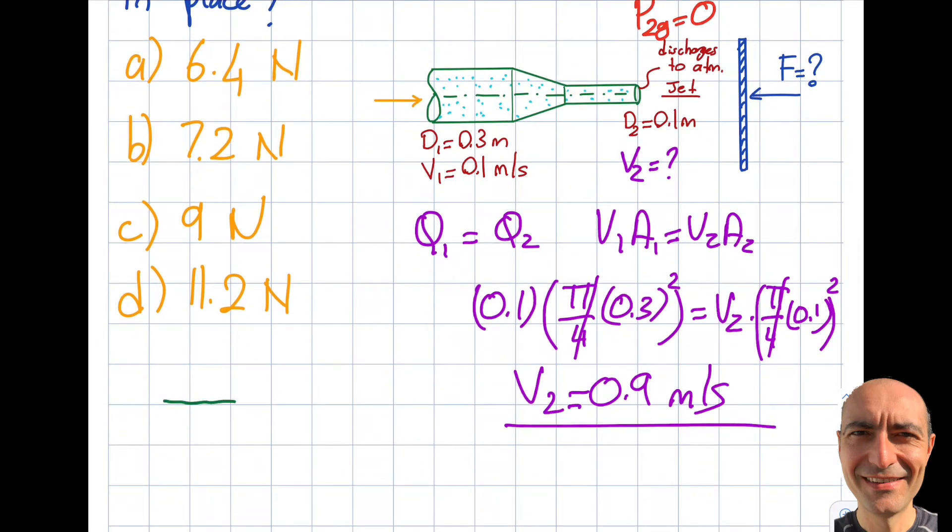Let's redraw this and understand what's going on. I have this exit, this is the V2 section I'm drawing, and I have a plate. If you look at the water, it's going to come here, hit, and fan out in 2D. In 3D, it's fanning in every direction. In 2D cross-section, it's going to go up and down.